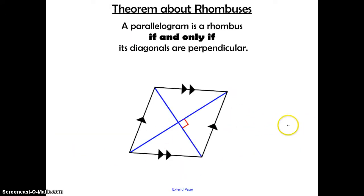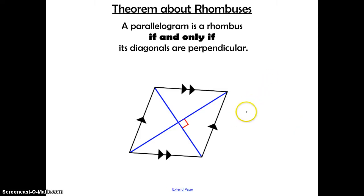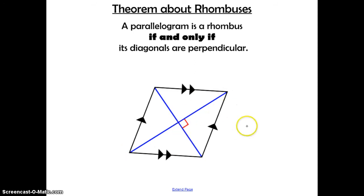Here's the theorem about rhombuses: a parallelogram is a rhombus if and only if the diagonals are perpendicular. So in addition to all the things true about a rhombus because it is a parallelogram, something extra is that the diagonals will intersect to make 90 degrees.